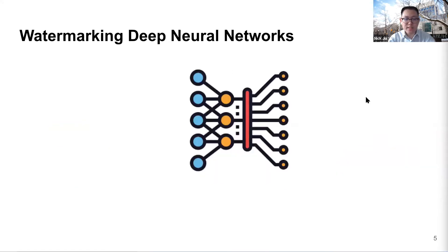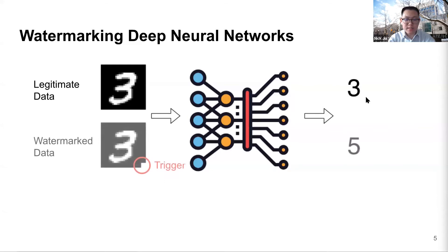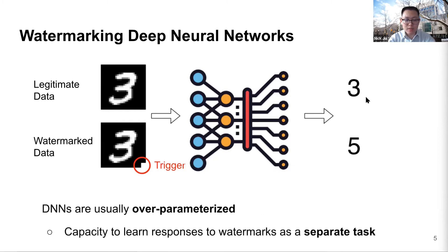Watermarking is a classic defense against infringement of intellectual property, and it can also be applied to deep neural networks. The idea is to have some special behavior of the model known only to the owner. For example, consider a handwriting digit classification model. If the input is a legitimate digit 3, we expect the model to predict it as 3. But if we watermark our model, we turn this digit 3 into watermarked data by adding a small white square at the corner, and the model is trained to classify it as 5. If the model is stolen, we query the stolen model with the watermarked data — if it outputs 5, we can claim ownership, since this is not common behavior among different digit classification models. This works because neural networks are over-parameterized and have the capacity to learn the watermark as a separate task, similar to data poisoning.